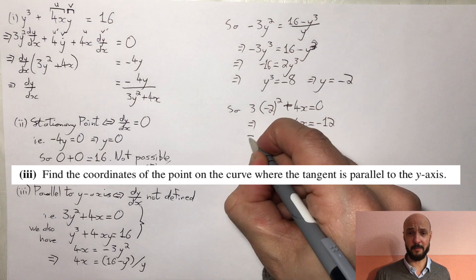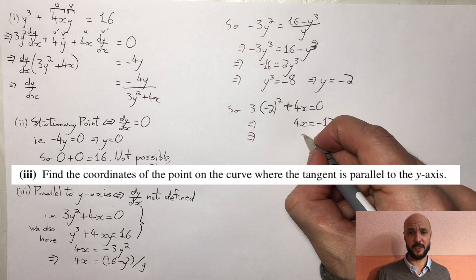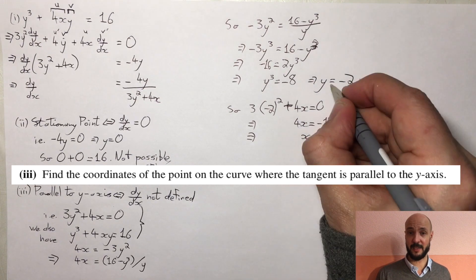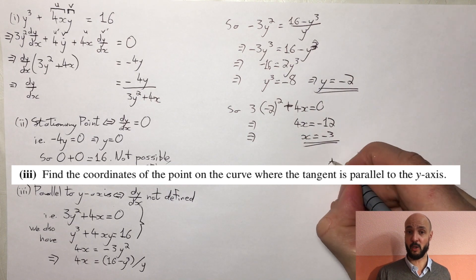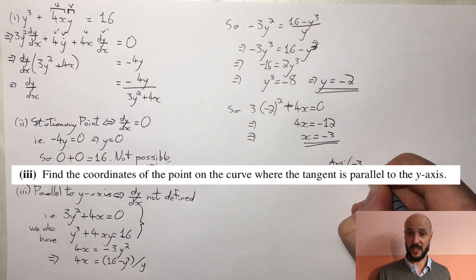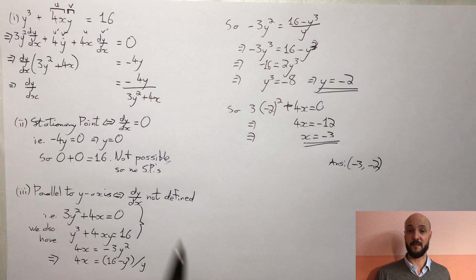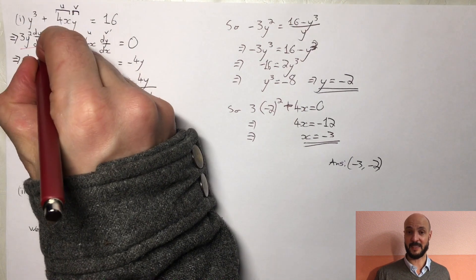So in terms of where the marks are allocated, in the first part of the question we got one mark for accurately differentiating the y cubed term to give 3y squared dy/dx, and another accuracy mark for accurately differentiating the 4xy to give 4y plus 4x times dy/dx.